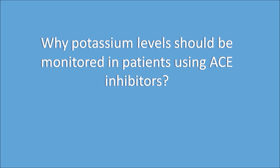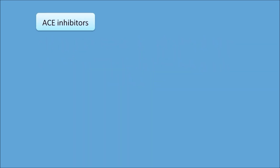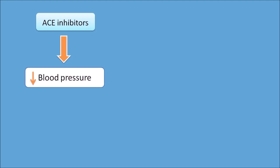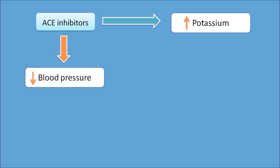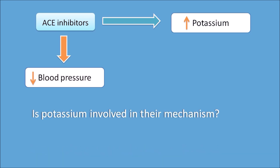Why should potassium levels be monitored in patients using ACE inhibitors? ACE inhibitors decrease blood pressure, and they also increase potassium levels. Is there a relation between this increased potassium and their blood pressure mechanism? Obviously the answer is no — the increased potassium is because of their renal action.